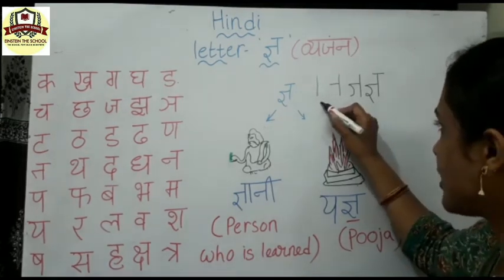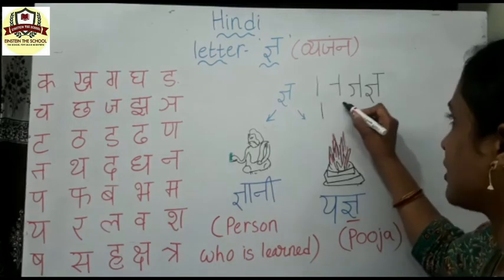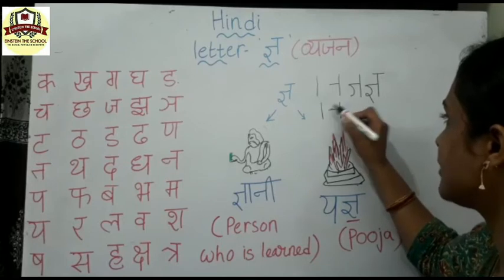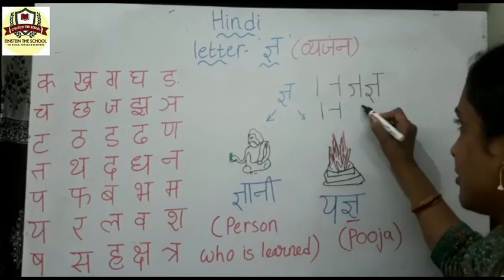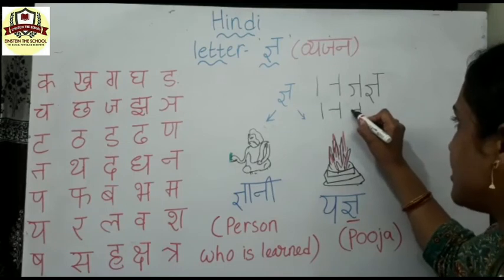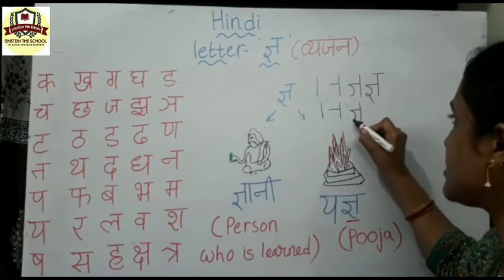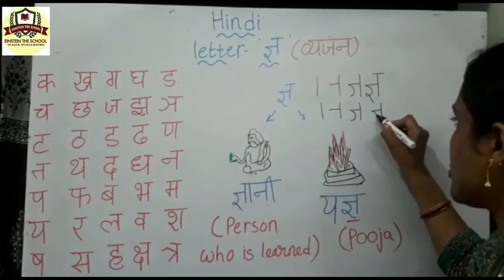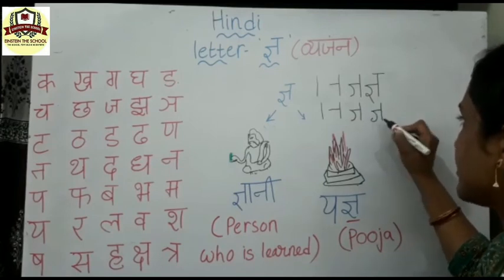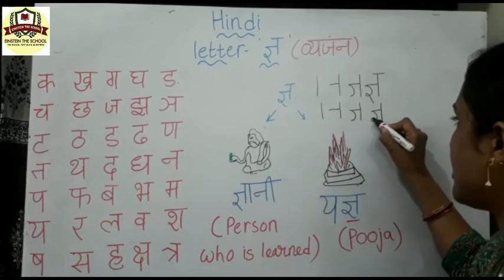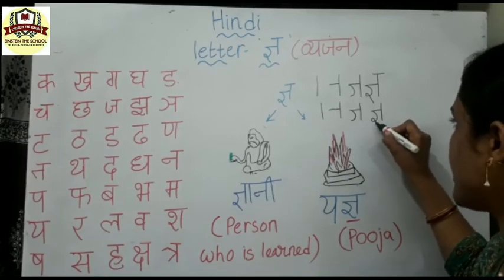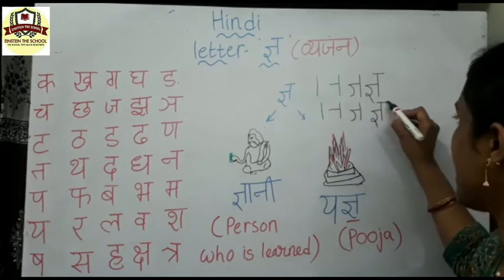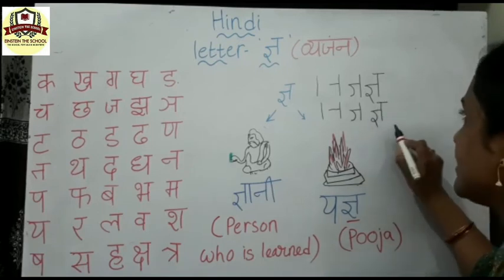Let's see one more time. First, write the standing line. After writing the standing line, from the middle towards the left side, write the sleeping line. Now write the reverse C. After the reverse C, write a loop and come out. Now write the sleeping line overhead.